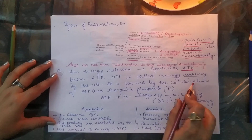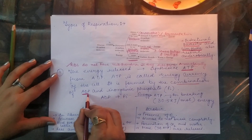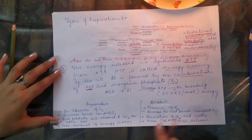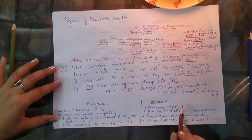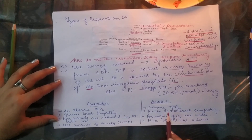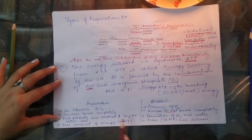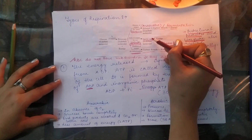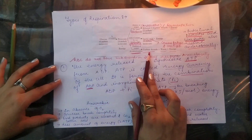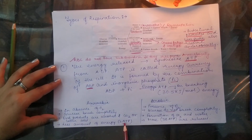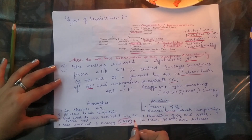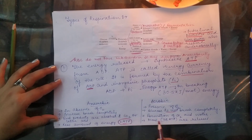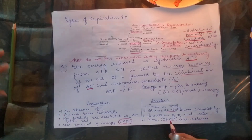The energy from all three processes synthesizes ATP — adenosine triphosphate — the energy currency of the cell. ATP is formed by the combination of ADP (adenosine diphosphate) and a phosphate molecule. Comparing anaerobic and aerobic respiration: in anaerobic respiration, glucose does not break down completely, yielding only 2 ATP molecules per glucose. In aerobic respiration, glucose breaks down completely into CO2 and water, yielding 38 ATP molecules — making it far more efficient.